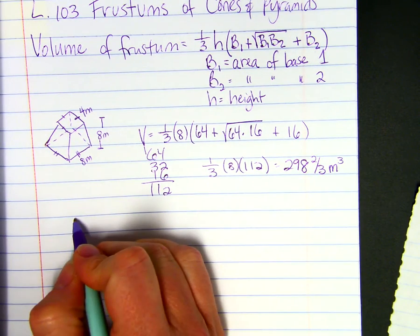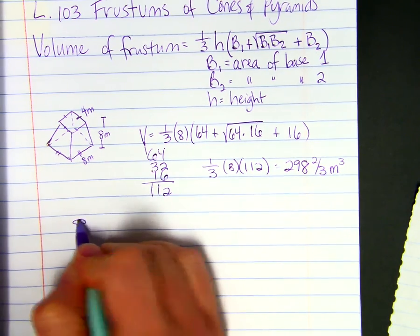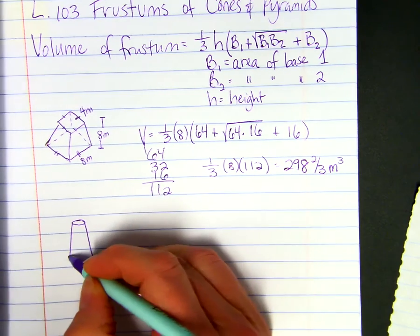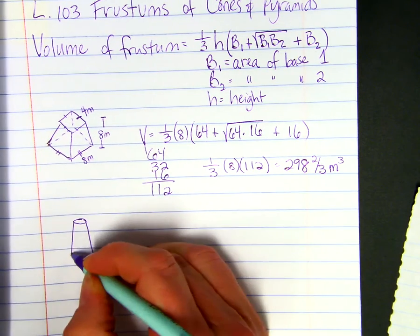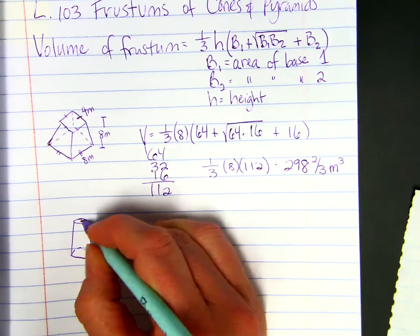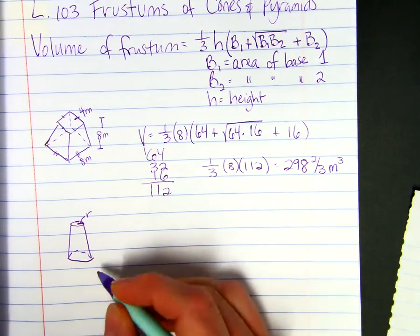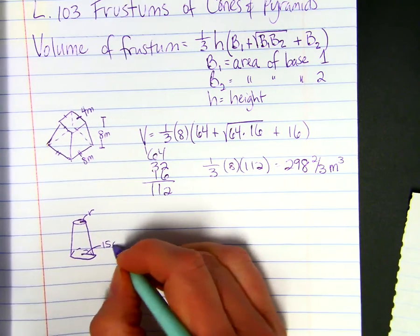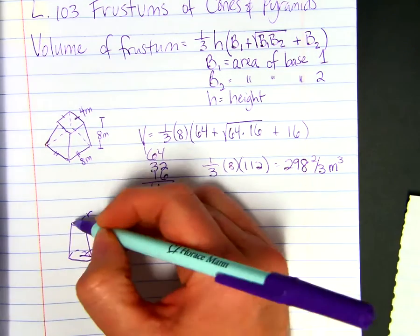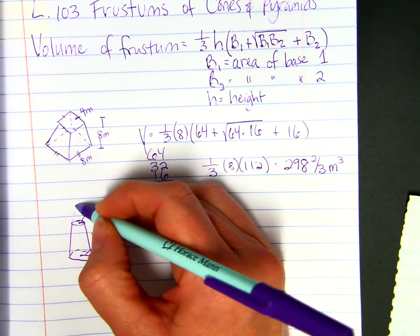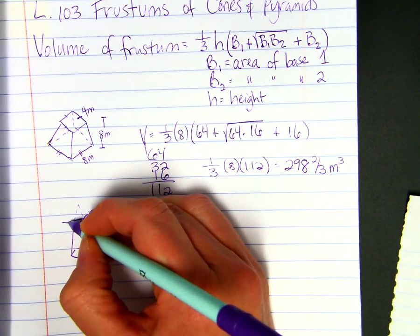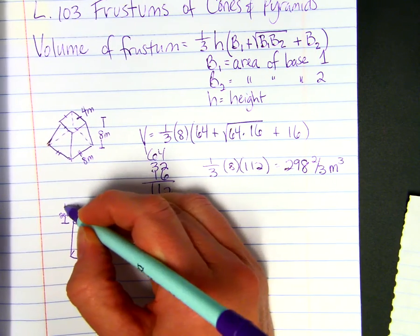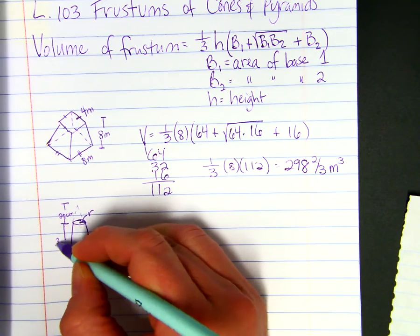Now we're going to draw one that is a cone. This is R for radius. This radius is 15 centimeters. The part that was cut off is 20 centimeters, and the height of the frustum is 30 centimeters.